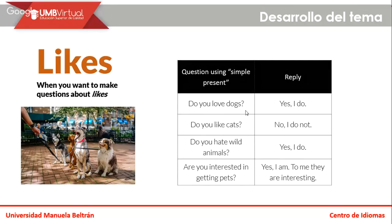En la primera hacemos referencia al verbo 'love' — ¿qué puede significar? 'Do you love dogs?' — amas o te encantan los animales. 'Do you like cats?' — ¿te gustan? 'Do you hate?' — ¿odias a los animales salvajes? Como pueden ver, en cada uno estamos utilizando el mismo auxiliar dado que el sujeto es el mismo. Posteriormente tenemos el verbo love, like, or hate. Love expresa una connotación positiva, like al igual, pero hate expresa una connotación negativa.